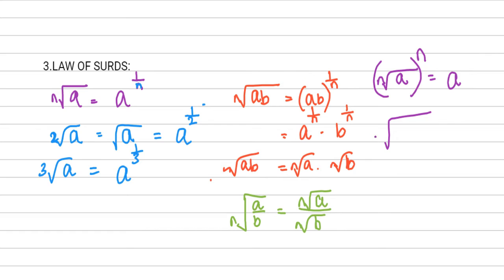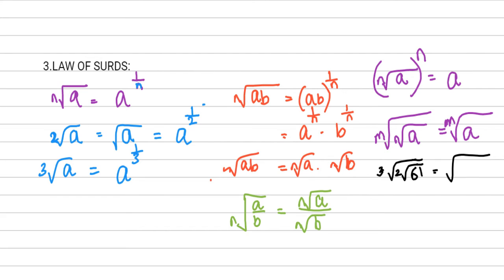If you have a root inside another root — the mth root of the nth root of a — you can simplify it as the (m×n)th root of a. For example, the cube root of the square root of 61: multiply 3 and 2 to get 6, so cube root of square root of 61 equals the 6th root of 61.